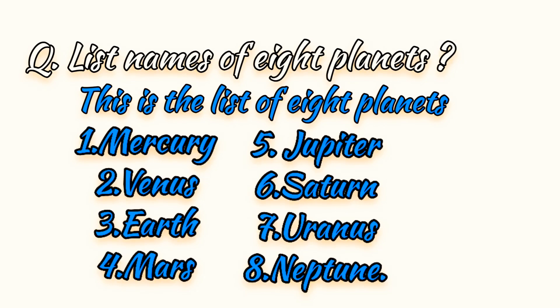List eight planets. Okay, this is the list of eight planets: Mercury, Venus, Earth, Mars, Jupiter, Saturn, Uranus, Neptune.